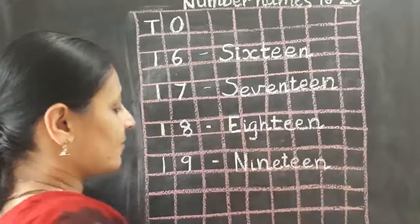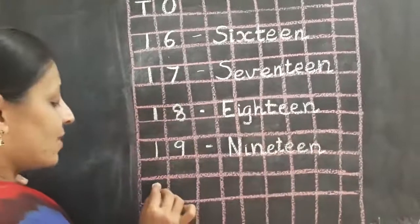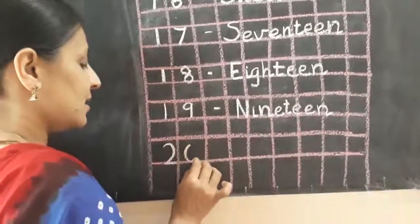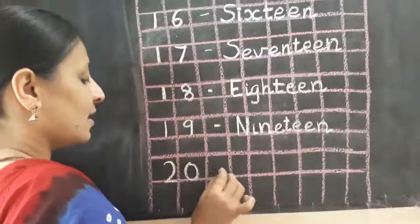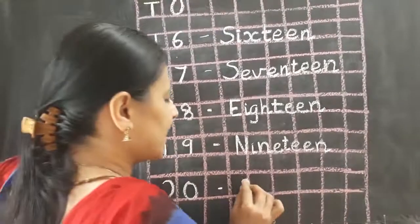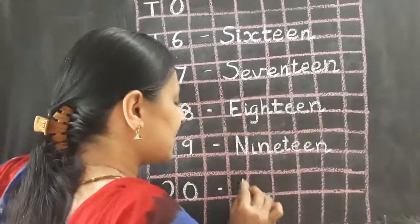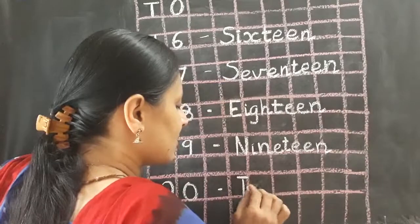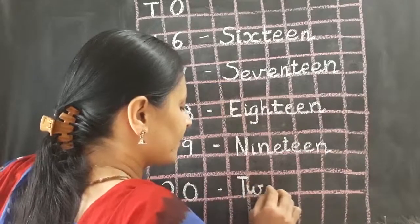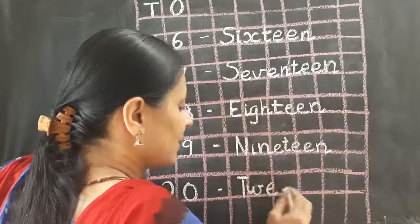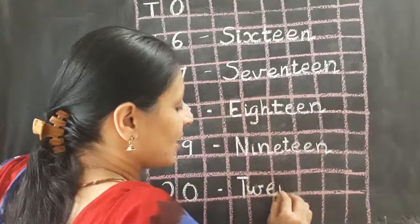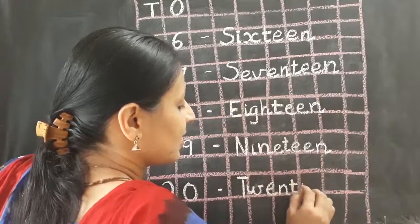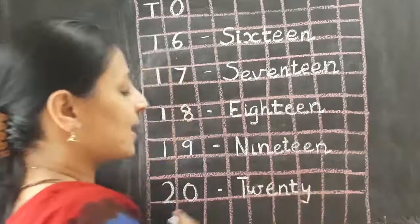Now I will write 20. And the number name of 20 is T, W, E, N, T, Y. 20.